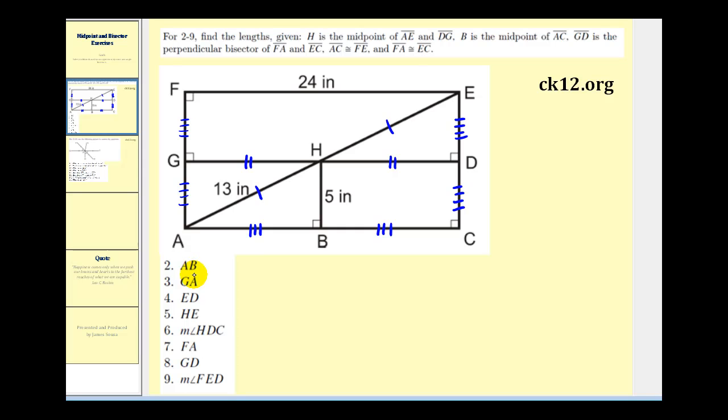The first question is, determine the length of AB. Well here's AB and notice it's one of the legs of this right triangle right here. So we could determine the length of AB by using the Pythagorean Theorem. However,